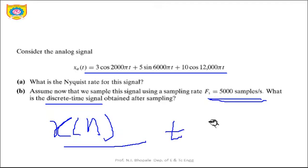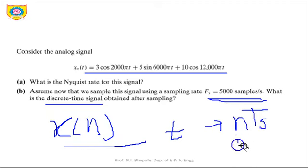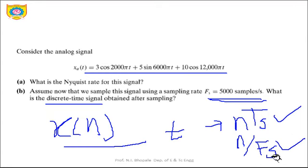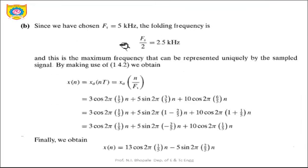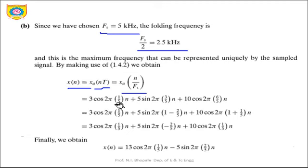To convert X(T) into X(N), substitute T = N·TS = N/FS. Since FS is given as 5 kHz, we directly use N/FS. Wherever the term T appears, replace it by N/FS. For the first component, 2000π·(N/5000) = 2π·(1/5)·N. For the second, 3k/5k = 3/5. For the third, 6k/5k = 6/5.